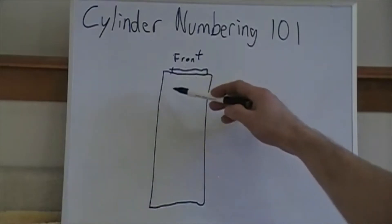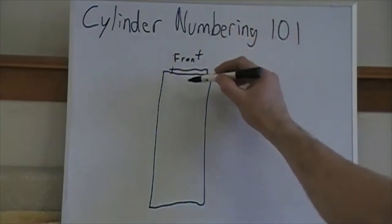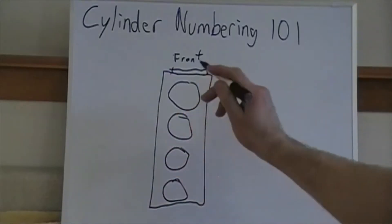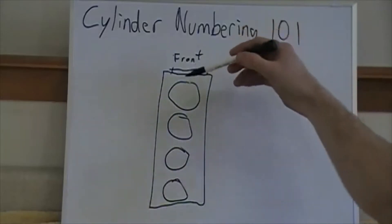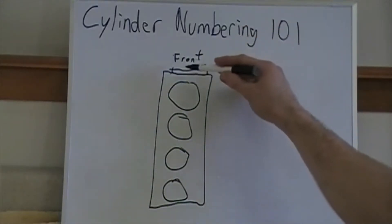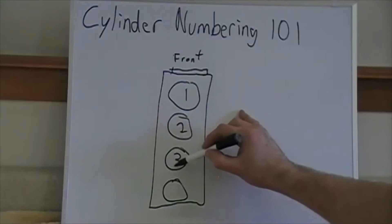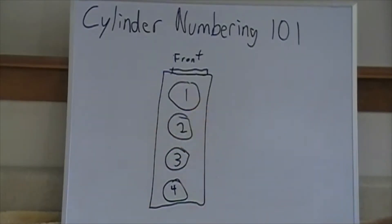This larger rectangle is going to represent the block. When we have an inline engine it's really easy. Each one of these circles represents a cylinder. So for an inline block we start at the balancer or the front and it's cylinder one, two, three, four. I can't think of anybody that does anything other than that on an inline engine.